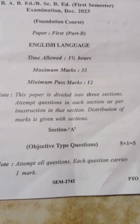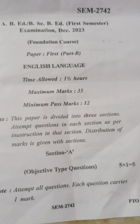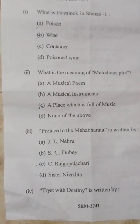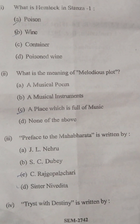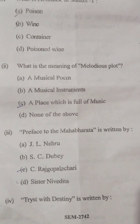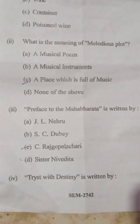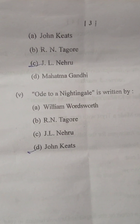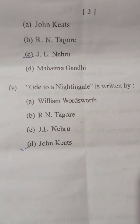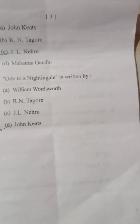In Section A, there are five objective questions. Each question carries one mark. What is hemlock in stanza first? The correct answer is poison. What is the meaning of melodious plot? Place which is full of music. Preface to the Mahabharat is written by C. Rajagopalachari. Tryst with Destiny is written by Jawaharlal Nehru. Ode to a Nightingale is written by John Keats. So, these are five objective type questions.